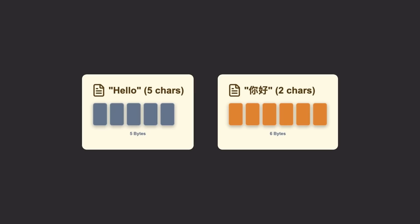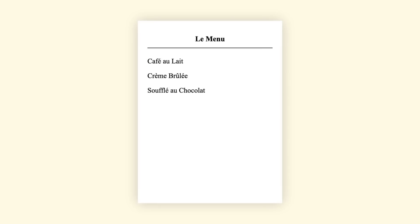Practical impact: a text file saying 'hello' is five bytes, versus saying 'ni hao' — six bytes for two characters. Same character count, different storage size. This is why international websites need two to three times more database space.